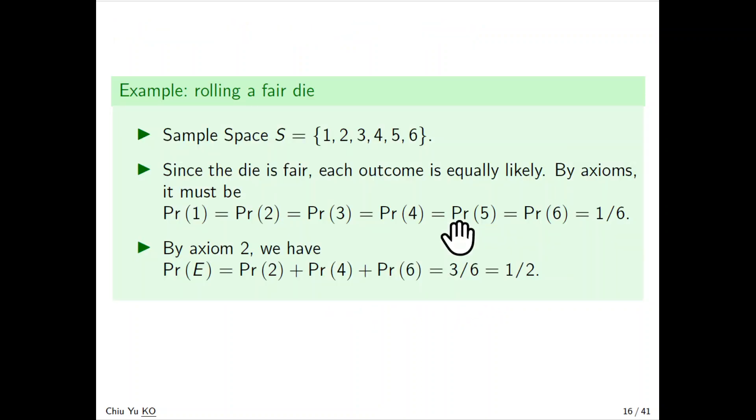It's a lot of implication. But before implications, an example. So we run a die: 1, 2, 3, 4, 5, 6. Because the die is fair, so each outcome is equally likely. And in that case, by the axioms, because they are mutually exclusive, they must be the same.